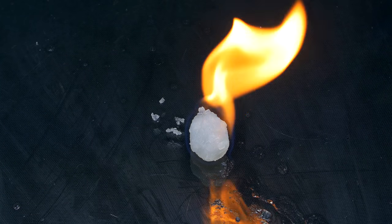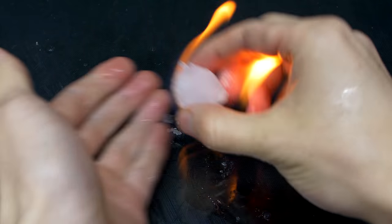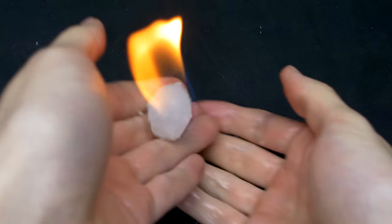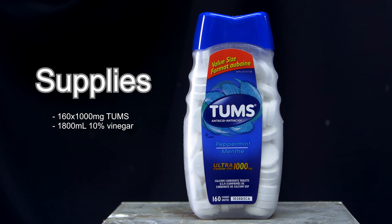Like I said in the previous video, the purpose of making calcium acetate is to make flammable jelly and also to do a dry distillation to produce acetone. So for this, I used the Ultra Strength Tums, which have about one gram of calcium carbonate per tablet.